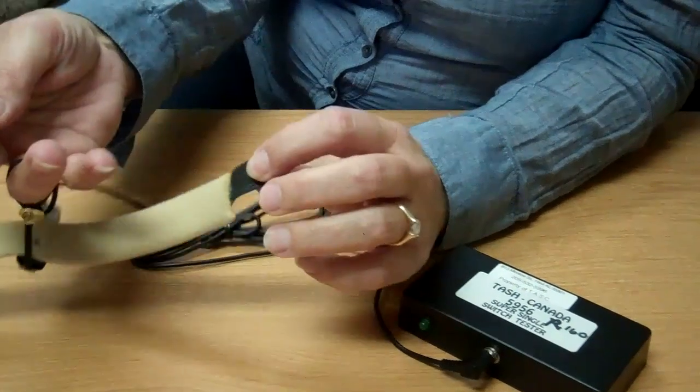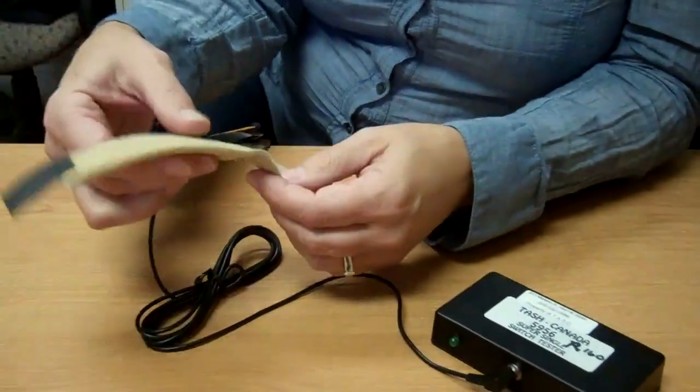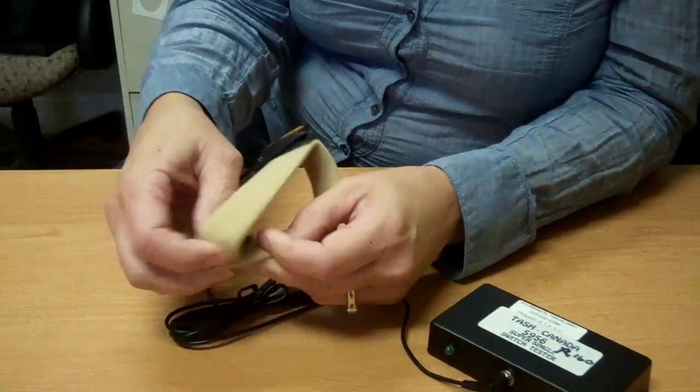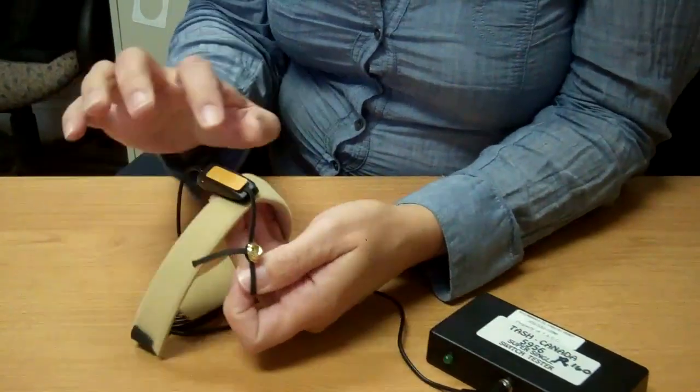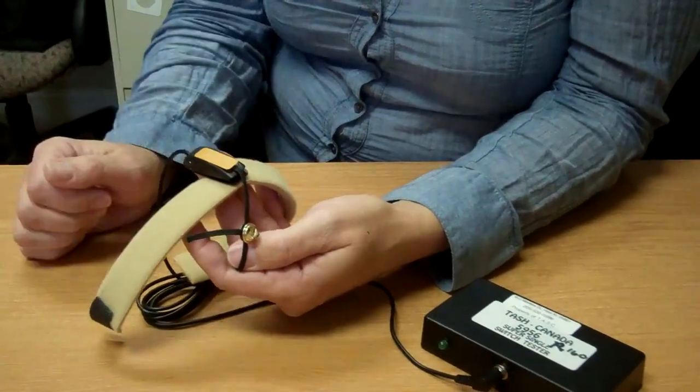It comes with a little bit of velcro, a very soft wristband. You can put it on wherever you need to and just hook it up to something. As the thing gets depressed, it activates the switch.